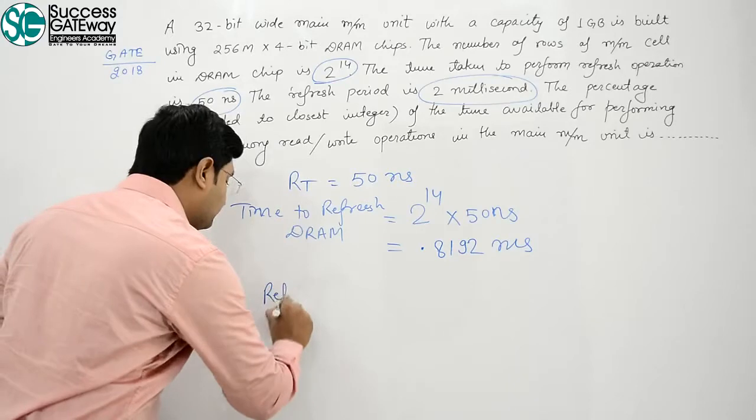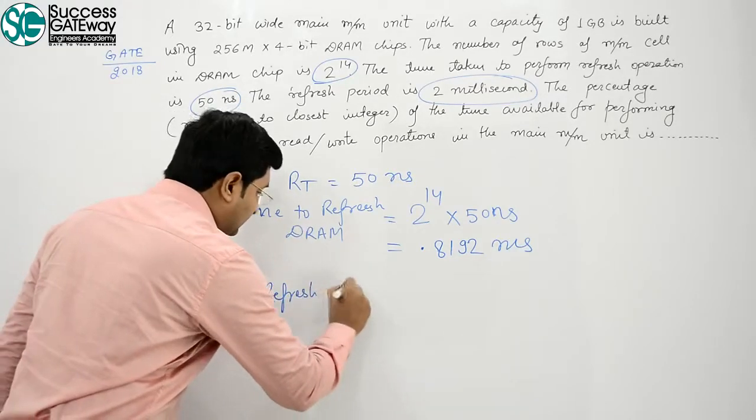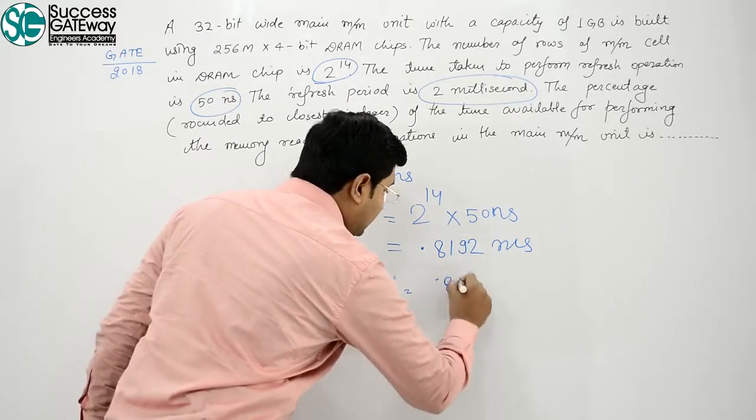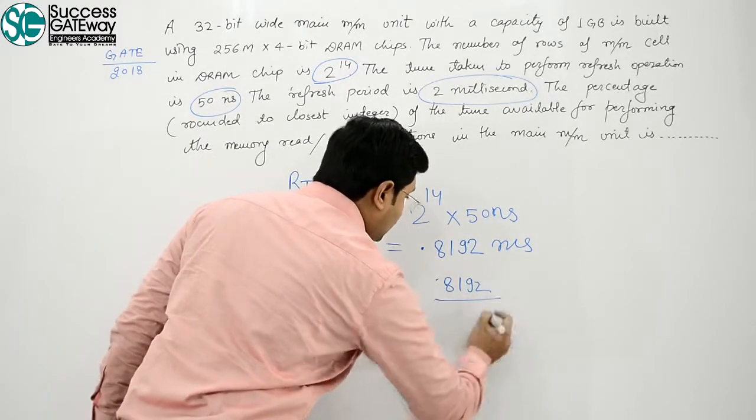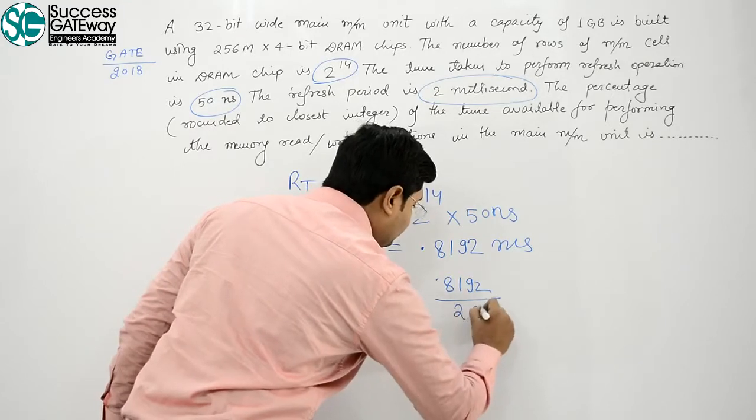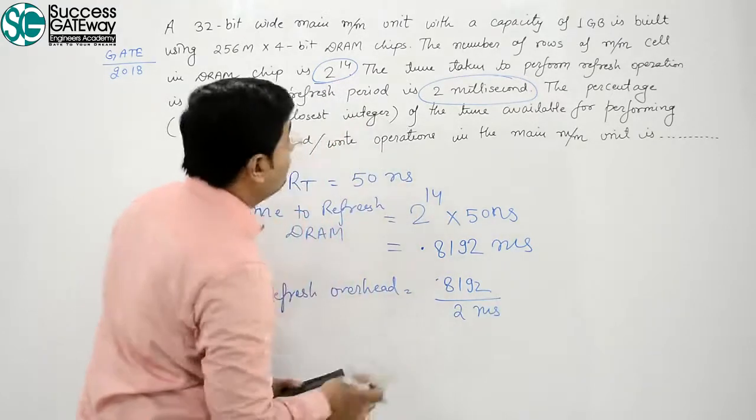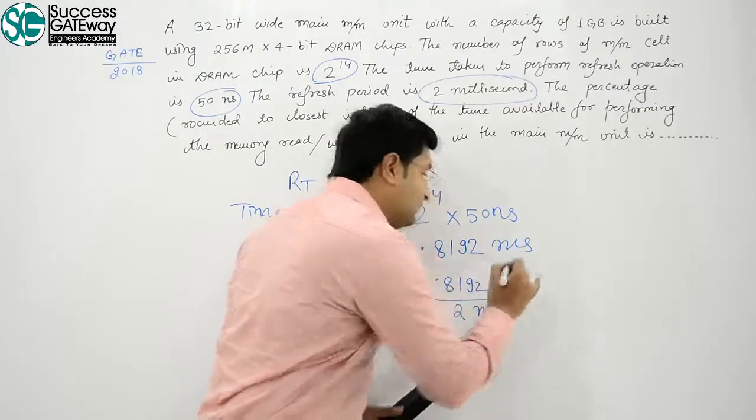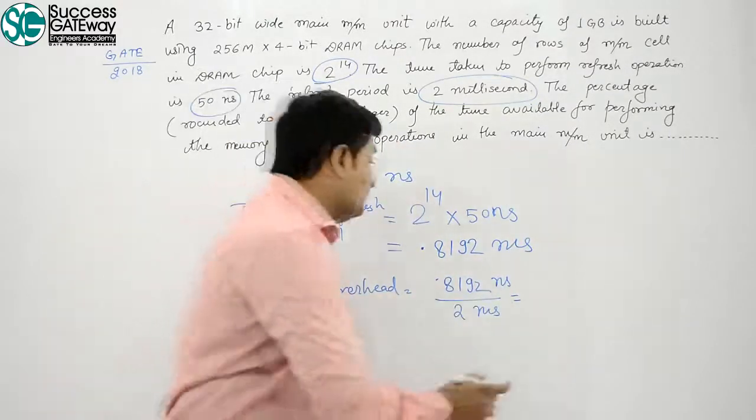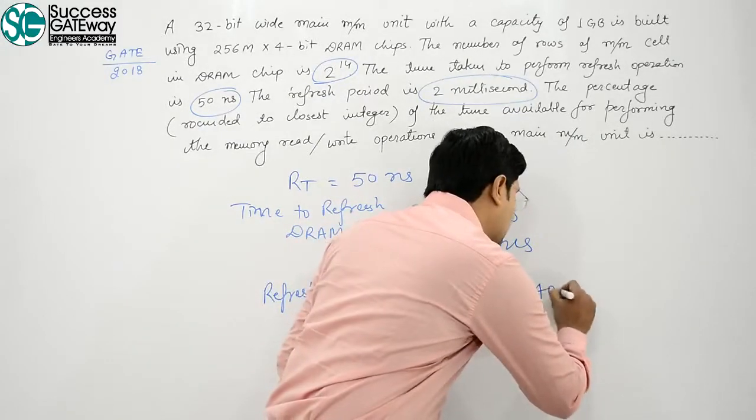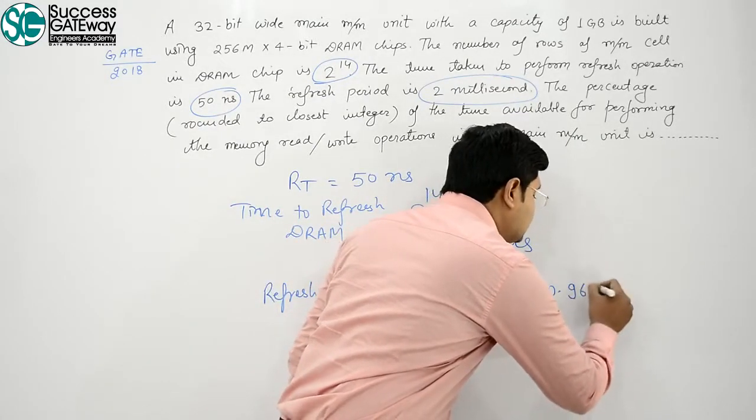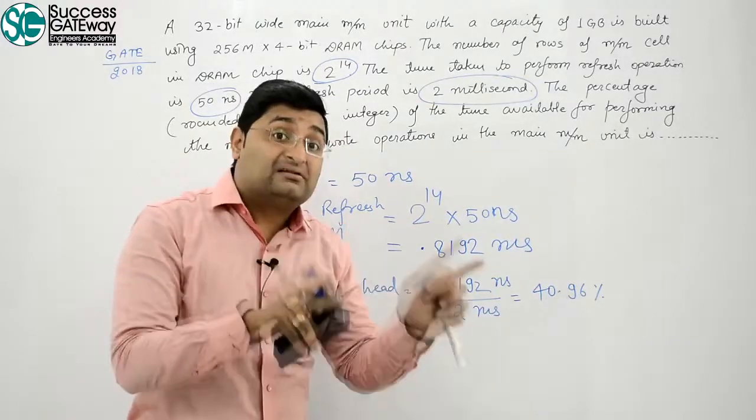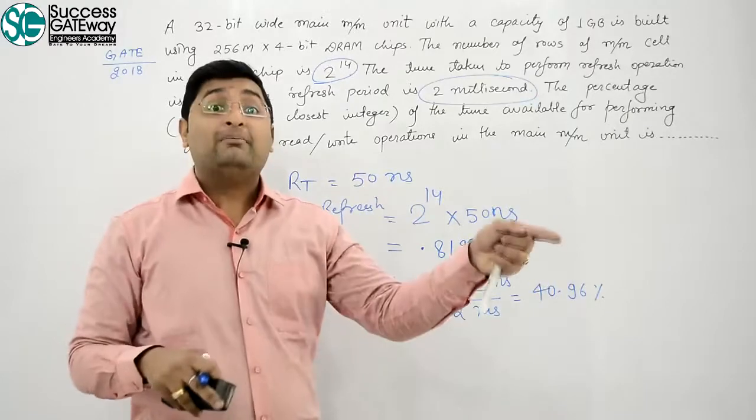Refresh overhead, what is refresh overhead? 0.8192 upon 2 millisecond. 0.8192 millisecond upon 2 millisecond, that you will get 40.96 percent. 40.96 percent time, you are refreshing memory.